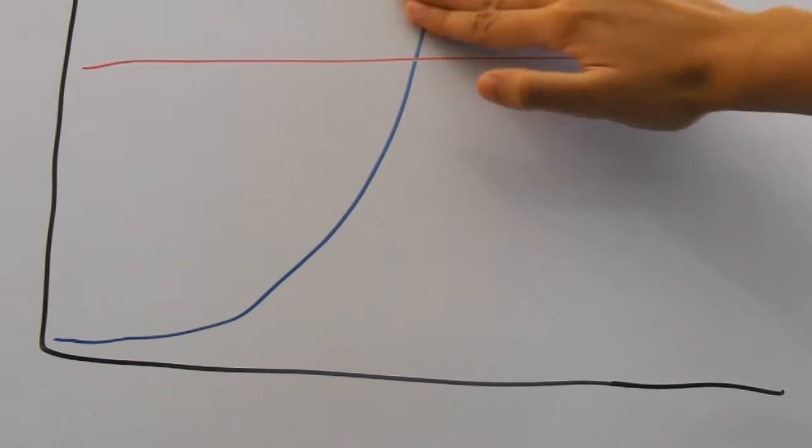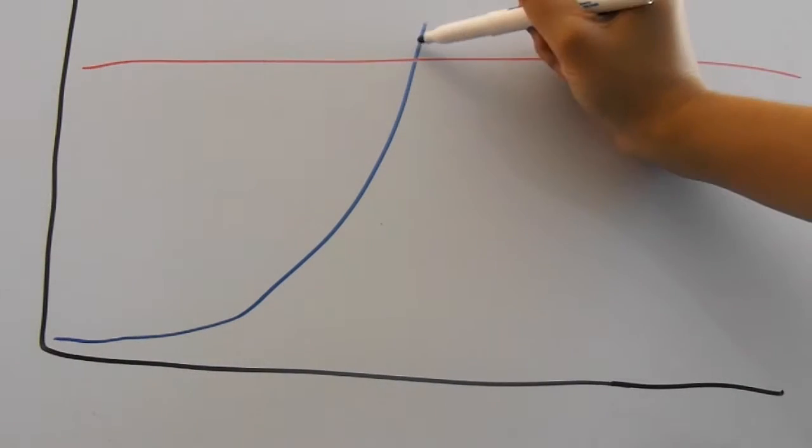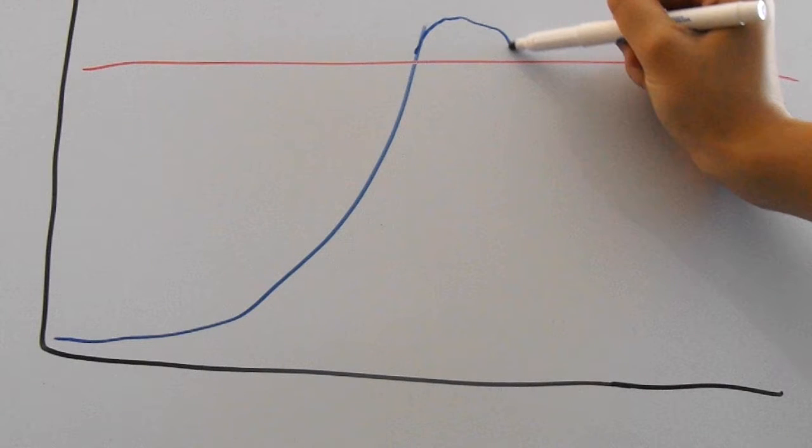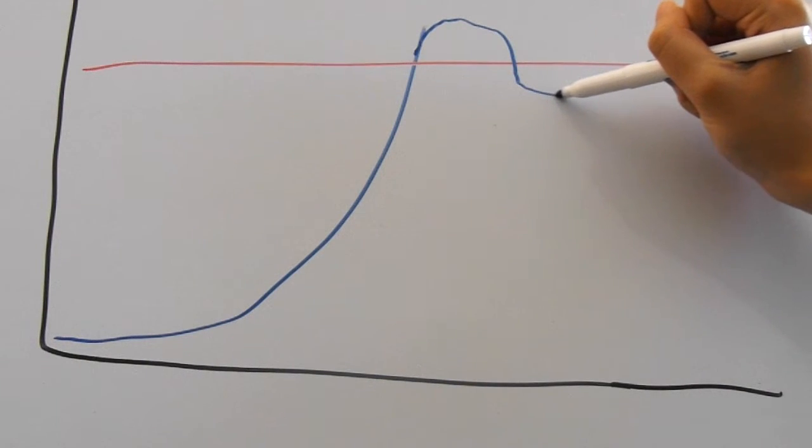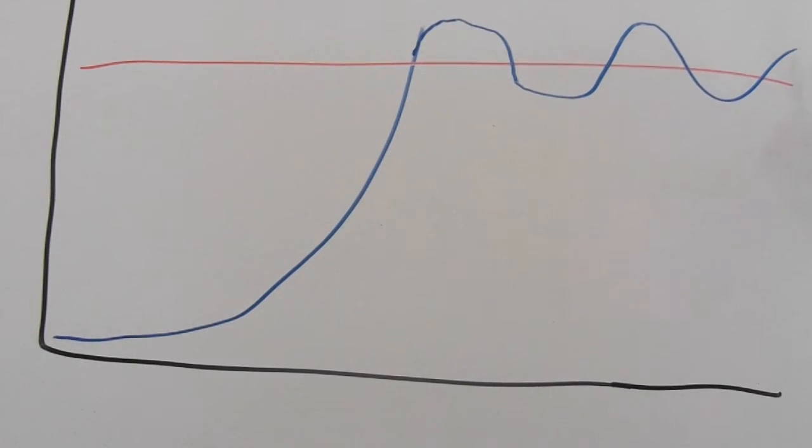Now we have to fix the graph. Of course, the population isn't going to perfectly stop at the carrying capacity, it can go a little bit over. Then after a while, when the population has too much competition and not enough resources, it will dip down a little under the carrying capacity.